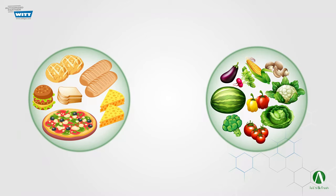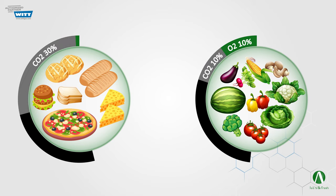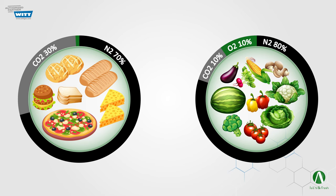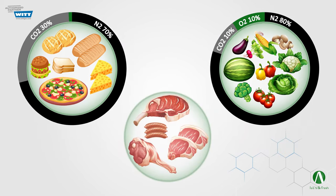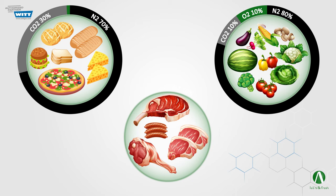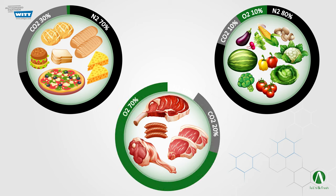In most cases, MAP is aimed at eliminating or reducing oxygen inside the packaging and replacing it with a mixture of carbon dioxide and nitrogen. Of course, in special cases such as packing red meat and fresh produce, the opposite is correct — we will not eliminate the oxygen but increase its concentration to prevent anaerobic growth. MAP therefore normally requires a mixture of at least two gases, and the optimum proportions vary from product to product.